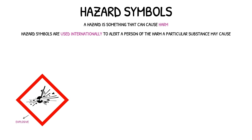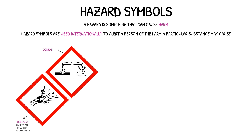Explosive — substances labelled with this symbol may explode if placed under certain circumstances. Corrosive — substances that are corrosive may burn and/or damage skin and clothing.